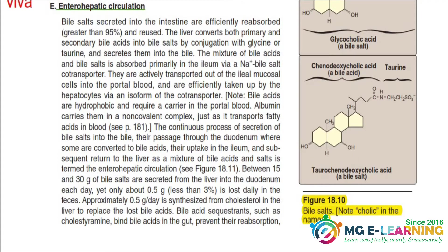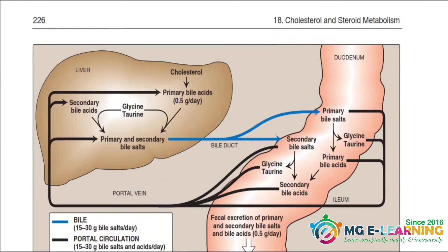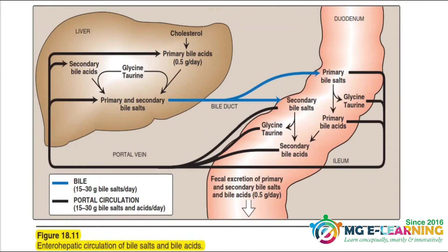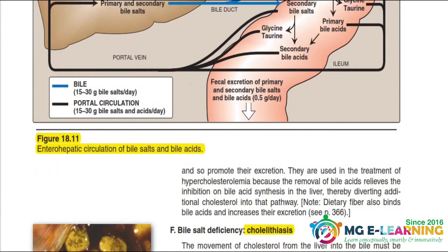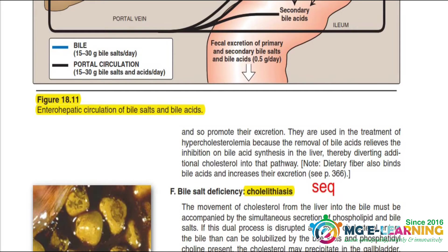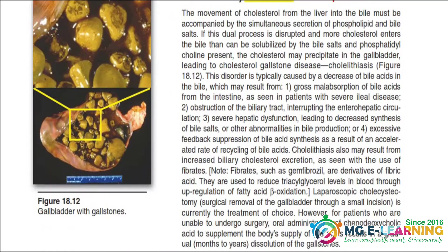Figure 18.10 gives the names of bile salts — you have to prepare it. This is the graphical representation of the entire enterohepatic circulation. You have to read it from the back and correlate it here for your final revision. Then you have to study cholelithiasis, which is an SEQ and is also important from viva.